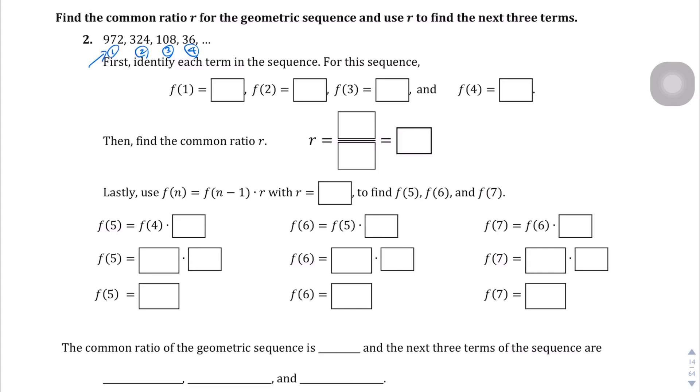So the first one right here is 972 and I get it from right there, just in case you didn't know. Term 2 is 324, term 3 is 108, and term 4 is 36.